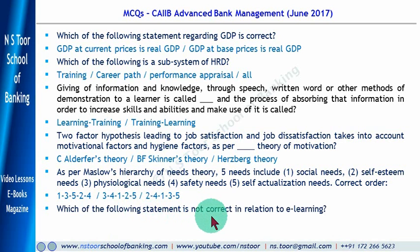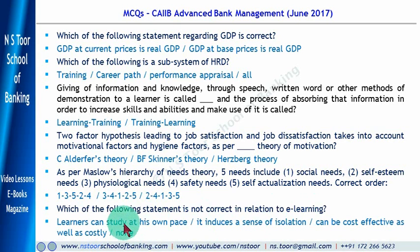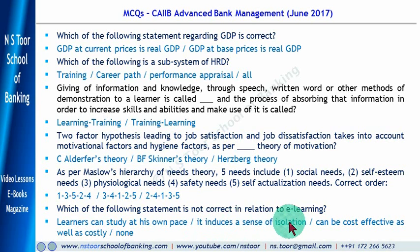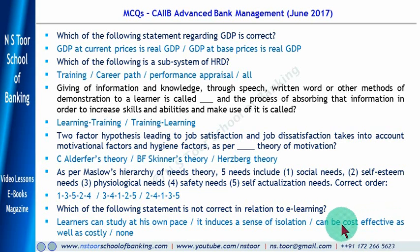Which of the following statements is not correct in relation to e-learning? The learner can study at his own pace — this is correct. It induces a sense of isolation — this is correct. As for cost, it can be cost-effective from the learner's point of view, but it can be very costly from the provider's point of view. So all these statements are correct, and the answer is none of these.